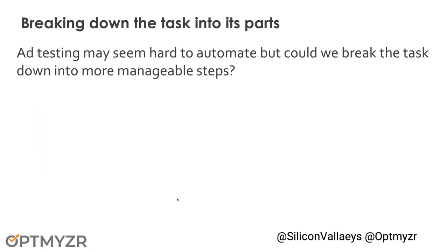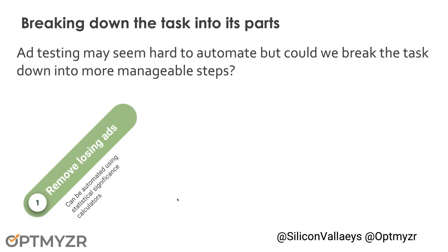The next thing to look at is how we break certain tasks into component parts. Ad testing for me is one of the most frequent tasks and also one of the more time-consuming ones, but it may seem hard to automate. If you ask can I write down the exact process and fully quantify it, the answer is sometimes no. Writing an ad that puts together all the right components and really speaks to the potential customer is not something that automation or computers are going to be really good at.